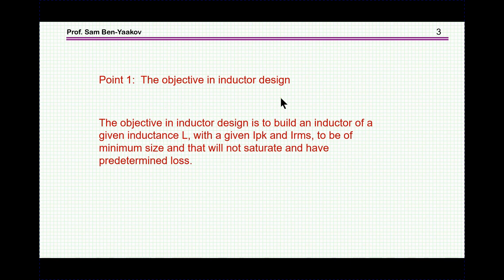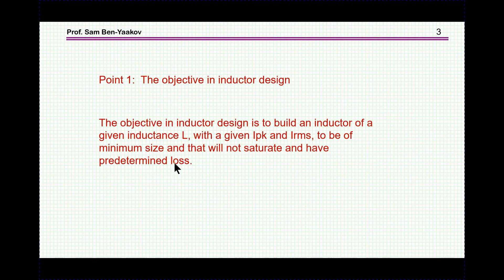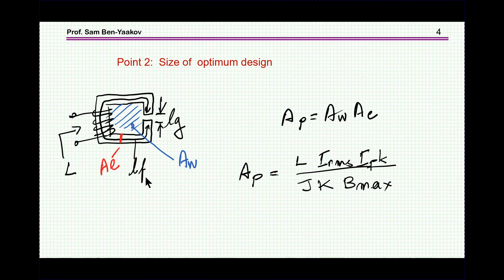Point one: the objective in inductor design. The objective is to build an inductor where the inductance is already given — it's a given inductance that we have to design for. We are given the peak current and the RMS current, which has to do with the topology. We want it to be of minimum size, not to saturate, and to have a predetermined loss — that is, we set up the level of core losses we would like to have, and we then have to come up with the design of this inductor.